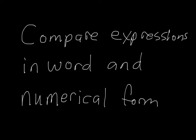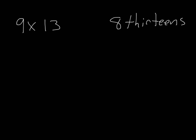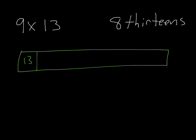Now we're going to look at comparing the expressions in word and numerical form. It sounds much more complicated than it really is. If we have the expression nine times thirteen and eight thirteenths, we can compare them. And we're going to use thirteen as a factor that we want to compare because that's going to make it easier for us. So the first thing we can do is draw a picture. I'm going to start with a rectangle, and I'm going to have nine thirteenths. So draw it out: one, two, three.